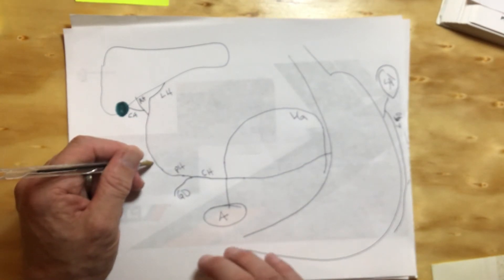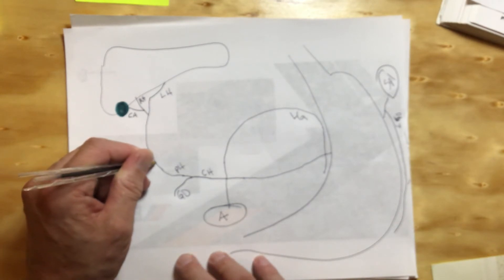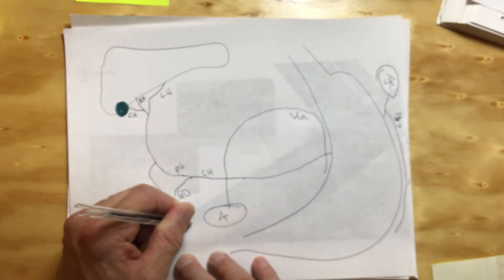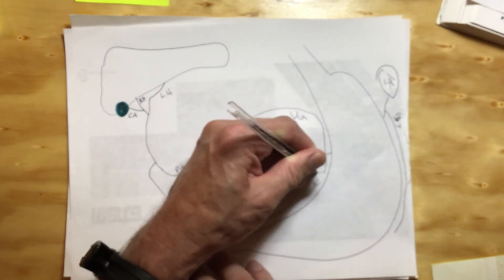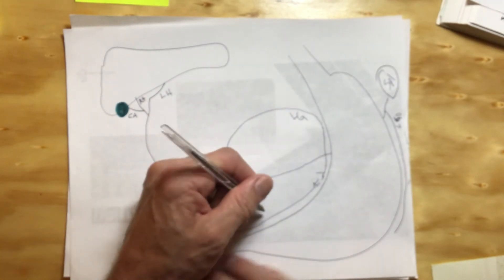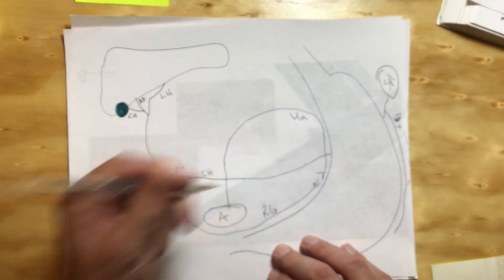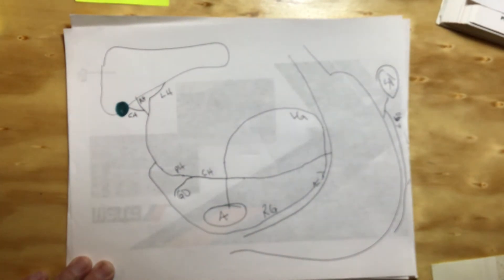Now there's another one here I want to mention. Come on here, the lesser curvature of the stomach. This is going to be a right gastric. There you go.